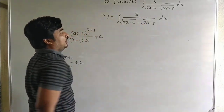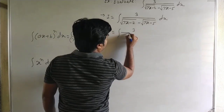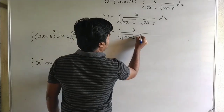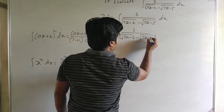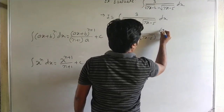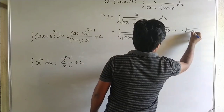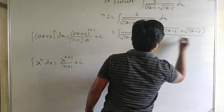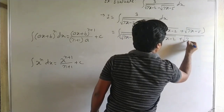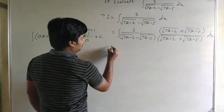Again, two terms are in a minus, so we take the rationalization. We multiply 3 upon under root 7x minus 2 minus under root 7x minus 5 by under root 7x minus 2 plus under root 7x minus 5 in numerator and denominator.